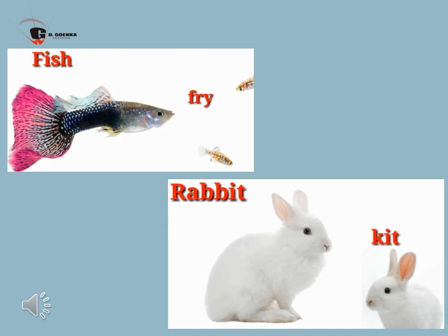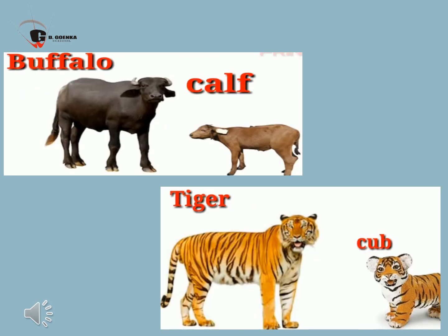Baby of a buffalo is called calf. Do you know, kids, that a buffalo can be 6 to 7 feet long, stand from 5 to 6 feet tall, and weigh up to 2000 pounds? We use the milk of buffalo to drink.